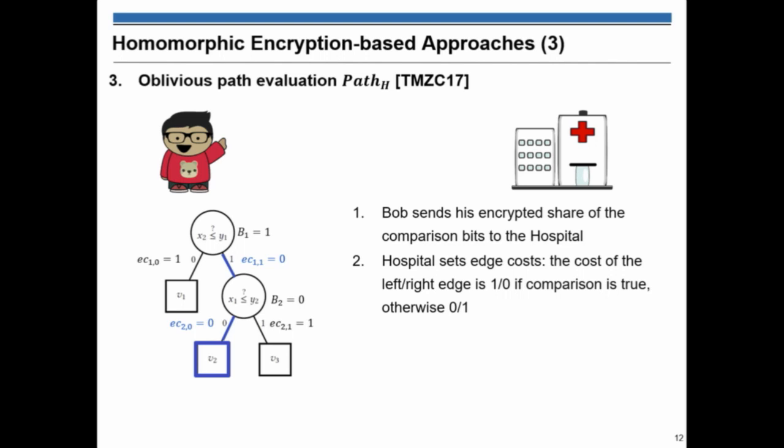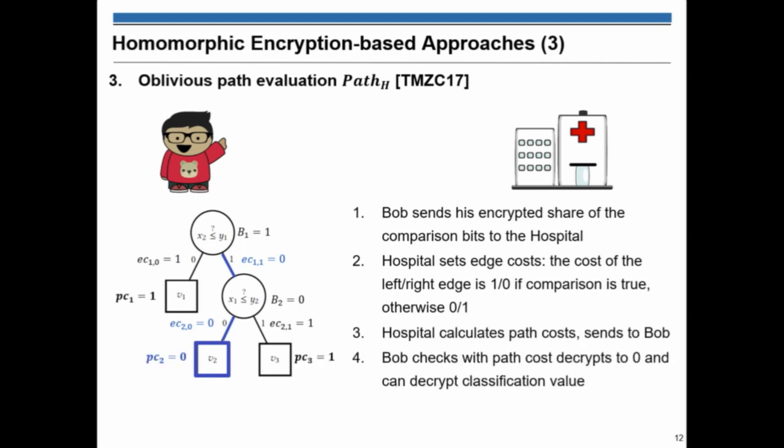And all of the other costs would be a random value. So, Bob doesn't know which node is actually the node of the corresponding result to his inputs. We instantiate this with homomorphic encryption using elliptic curves to be very efficient.